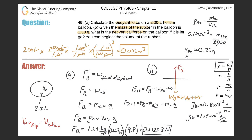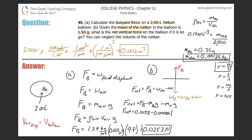Mass of helium is 0.00036 kilograms. The mass of the rubber was given as 1.5 grams, which converts to 0.0015 kilograms. Now plugging everything in: net force equals the buoyant force (0.0253 N) minus mass of helium (0.00036 kg) times 9.8, minus mass of rubber (0.0015 kg) times 9.8.